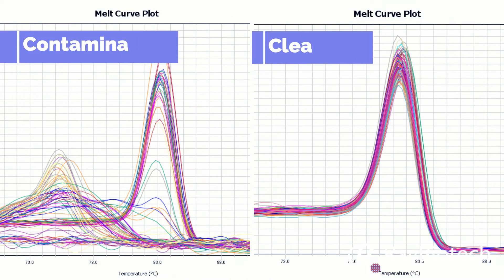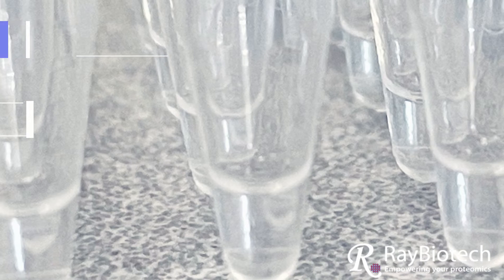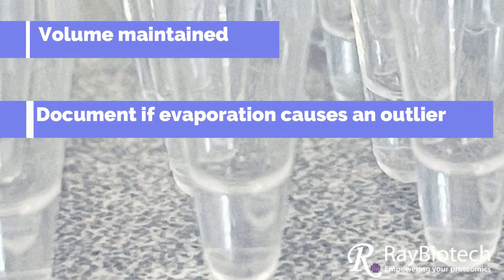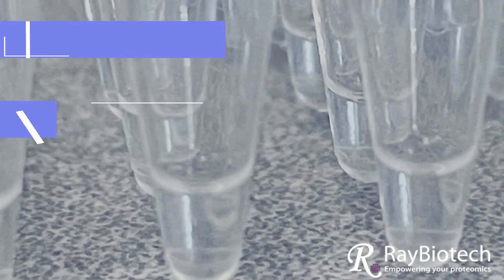Following the experiment, check the melt curve for indication of contamination, the wells for potential evaporation, and the seal for any potential issues. If any are noted, you can document them in your output to see if errors in plate sealing caused an experimental outlier.